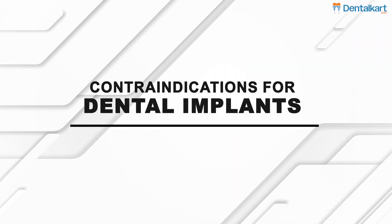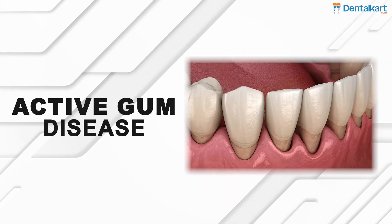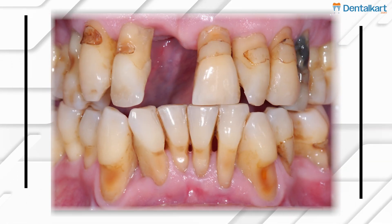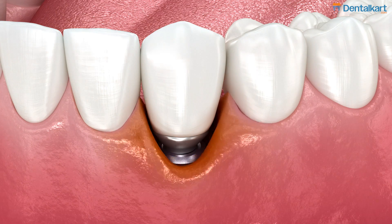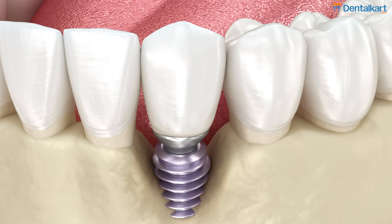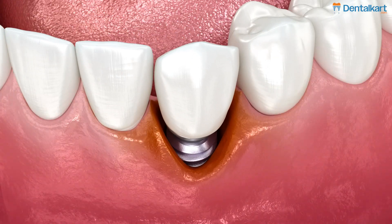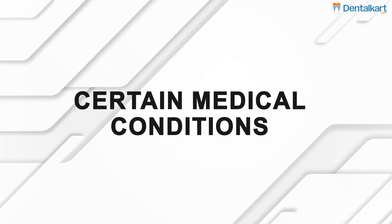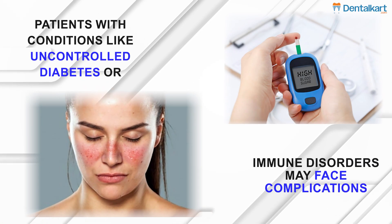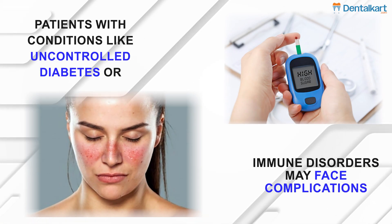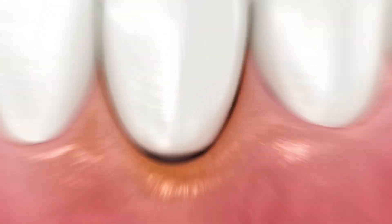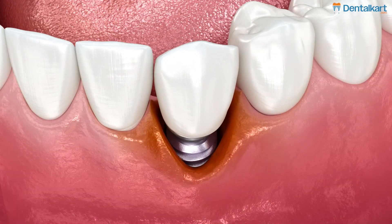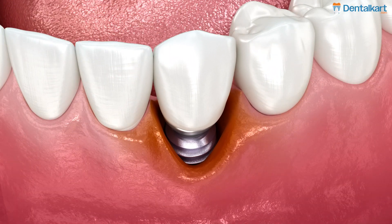Contraindications for dental implants. Active gum disease: periodontal disease must be addressed prior to implant placement, as untreated gum disease can lead to implant failure due to infection and poor healing. Certain medical conditions: patients with conditions like uncontrolled diabetes or immune disorders may face complications with healing and osseointegration, making implants unsuitable.